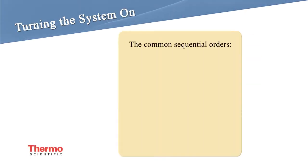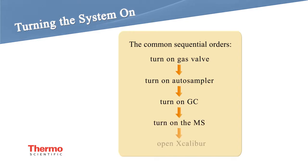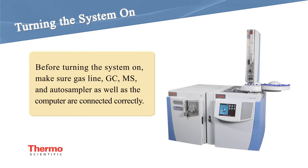Follow these steps for turning the system on: first turn on the gases, then turn on the autosampler, next turn on the GC and the mass spectrometer, and finally turn on the computer. Before turning on your system, please make sure...